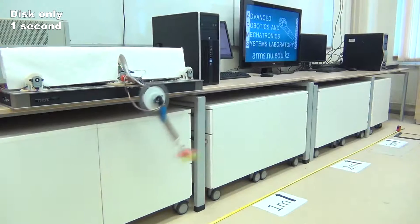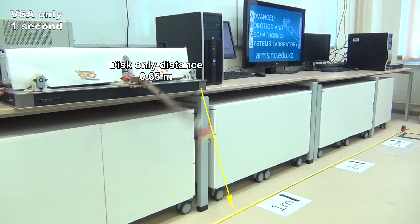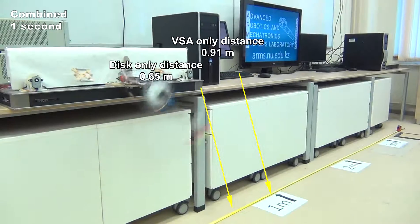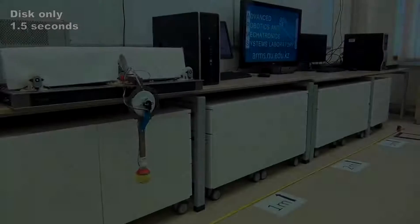The ball-throwing distance of the disk-only configuration in the one-second experiment was 0.65 m. The VSA-only achieved a distance of 0.91 m, while the combined system reached 1.76 m.